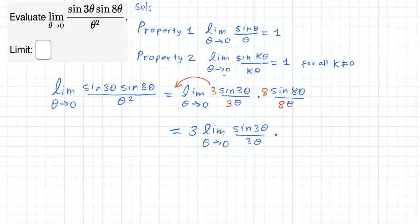But once you take the constant eight out, outside the limit, what you're going to be left with is eight times limit of sine of eight theta over eight theta as theta approaches zero.